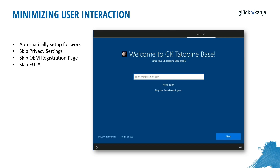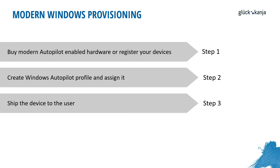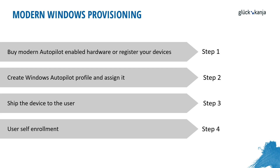Autopilot also takes care of all the prompts within the setup experience. Typically, the first screen asks if this is a personal or work device — we can skip that, skip the privacy settings, and skip the OEM registration page or EULA, minimizing user interaction. We can even skip the username prompt by assigning a user directly to the device. Step three is simply to ship the device to the user and let them self-enroll. That's it — four simple steps and you have a provisioned device, a smoother environment with less management overhead for your end users.